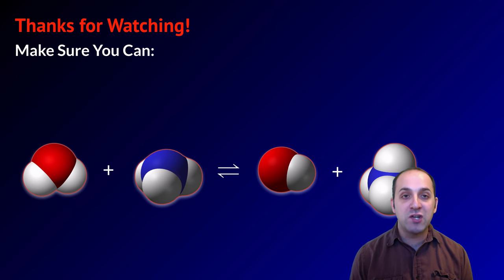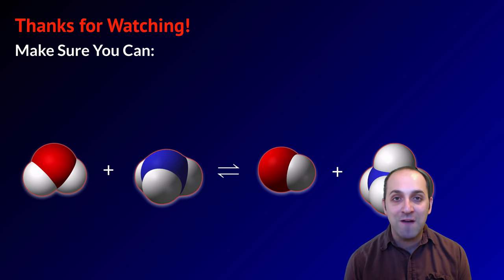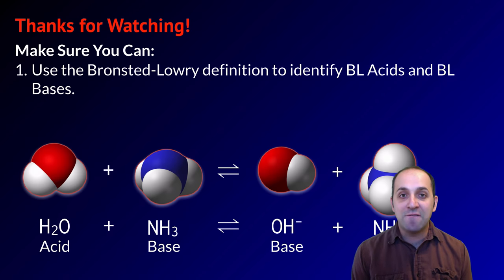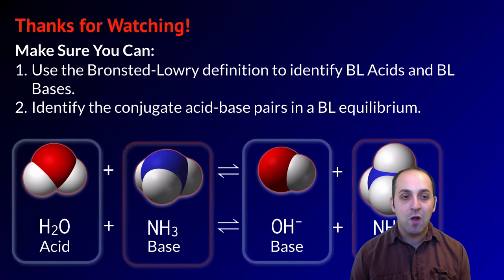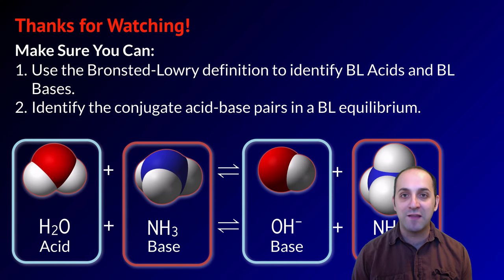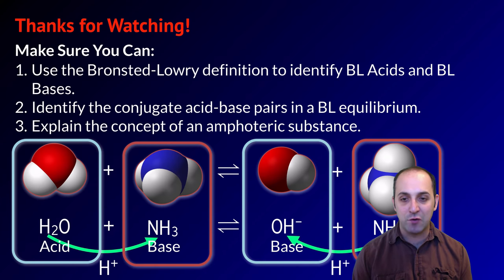Thanks so much for watching our discussion of Bronsted-Lowry acids and bases. Make sure you can do the following things: use the Bronsted-Lowry definition to identify Bronsted-Lowry acids and bases, identify the conjugate acid-base pairs in a Bronsted-Lowry equilibrium, and explain the concept of an amphoteric substance.